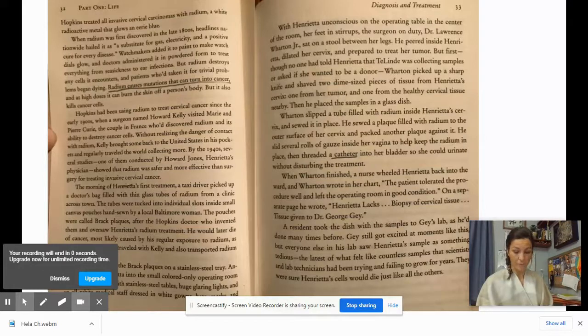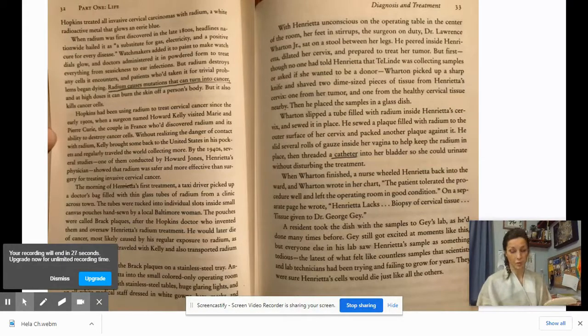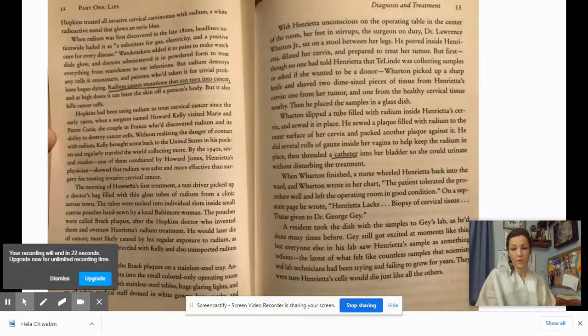A resident took the dish with samples to Gey's lab, as he'd done many times before. Gey still got excited at moments like this, but everyone else in his lab saw Henrietta's samples as something tedious. The latest of what felt like countless samples that scientists and lab technicians had been trying and failing to grow for years. They were sure Henrietta's cells would die just like all the others.